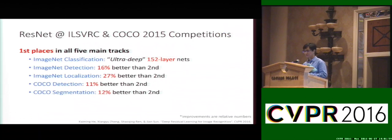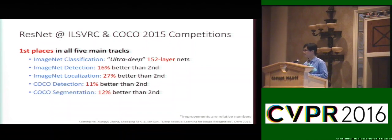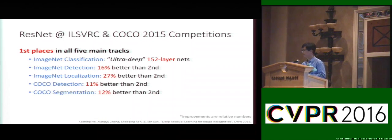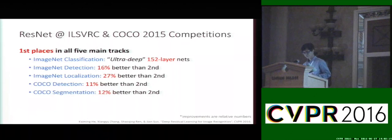These are the results of ResNet in last year's ImageNet and MS COCO competitions, and basically we won all five main tracks including ImageNet classification, detection, localization, and COCO detection and segmentation. For four of these tasks we are better than the second place winner by a large margin.